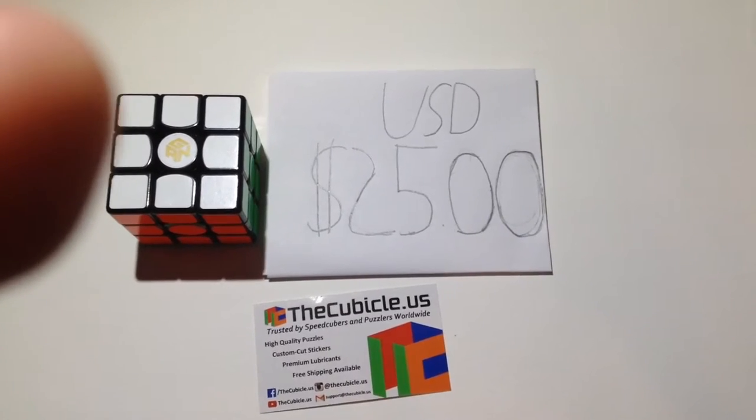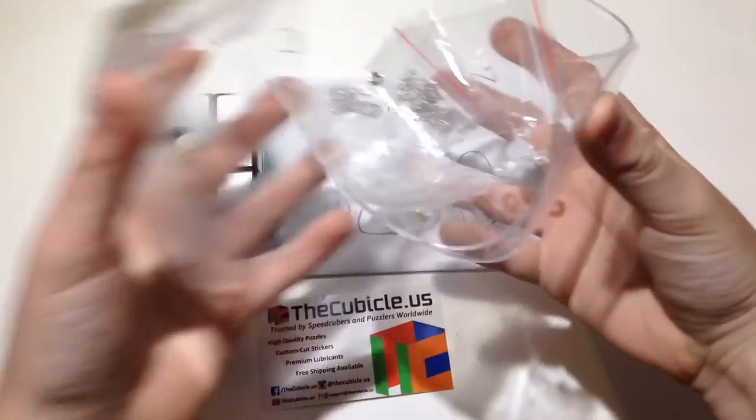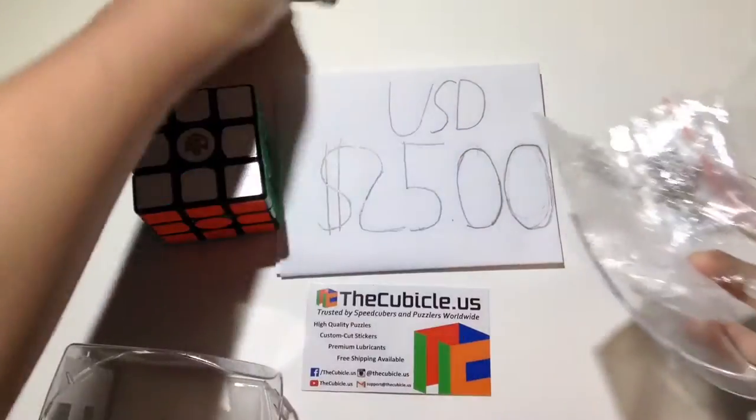This cube can be purchased at TheCubicle.us for $25. It comes in the Gans box with the Gans density tools and extra springs, washers, and nuts.